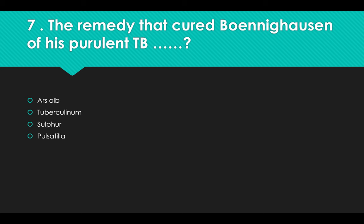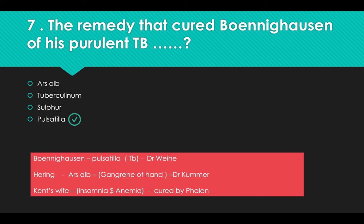The remedy that cured Boenninghausen of his purulent TB: Options: A) Arsenicum Album, B) Tuberculinum, C) Sulfur, D) Pulsatilla. Answer: Option D, Pulsatilla. Boenninghausen's pulmonary tuberculosis was treated with Pulsatilla by Dr. [name]. Also: Heron's gangrene of the hand was treated by Kummer; Ken Weiss disease (insomnia and anemia) was cured by Dr. Fallon.